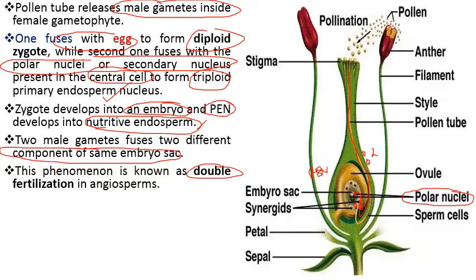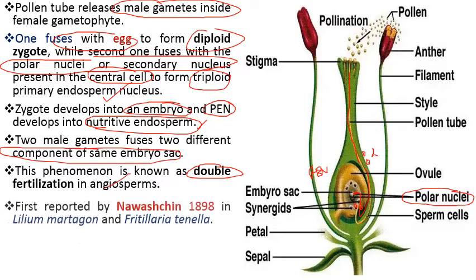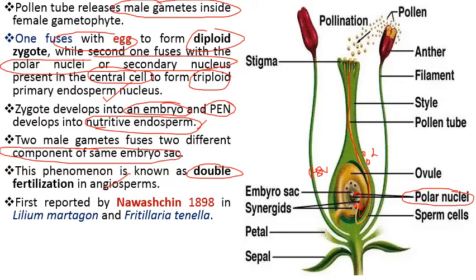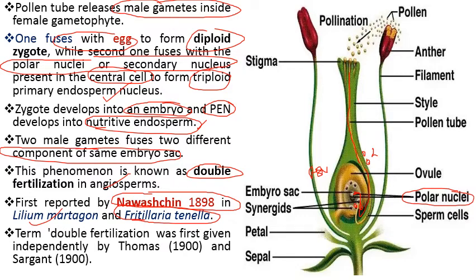This act of fertilization is known as double fertilization in angiosperms. In gymnosperms, the endosperm is formed before fertilization to avoid wastage. The phenomenon of double fertilization was first reported by Nawaschin in 1898 in the plants Lilium martagon and Fritillaria tinella. The term double fertilization was first given independently by Thomas in 1900 and Sargent in 1900.